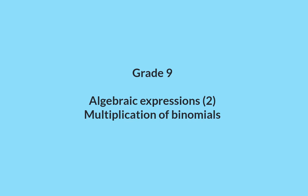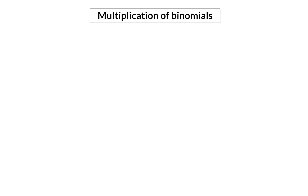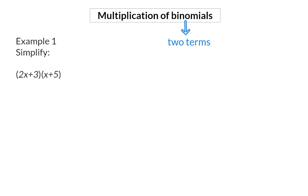Algebraic Expressions: Multiplication of Binomials. A binomial is an expression with two terms. Let's have a look at how we are going to multiply two binomials. Example 1 — Simplify. Here we have two terms, or a binomial, in the first bracket and two terms, or another binomial, in the second bracket. To multiply two binomials, you have to apply the distributive law twice.